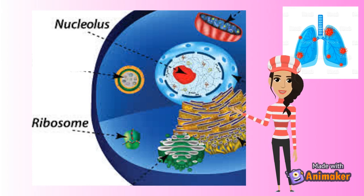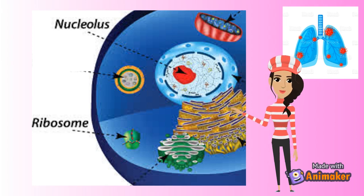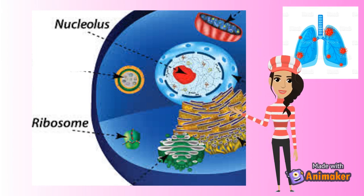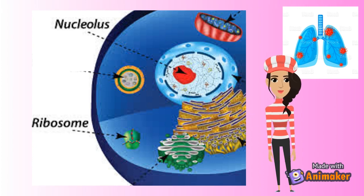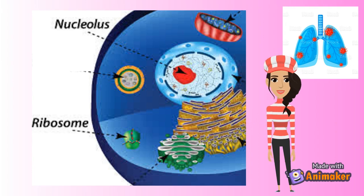When the virus enters the cells, it goes to a part of the cell called the nucleus. The virus goes to the nucleus and basically asks: where is the photocopy machine where you can make duplicates of things? The nucleus, thinking the virus is a good guy — which it definitely is not — shows it where the photocopy machine is. The part of your cells that acts like a photocopy machine is called the ribosome. The ribosome helps in copying protein, so your body always has protein.